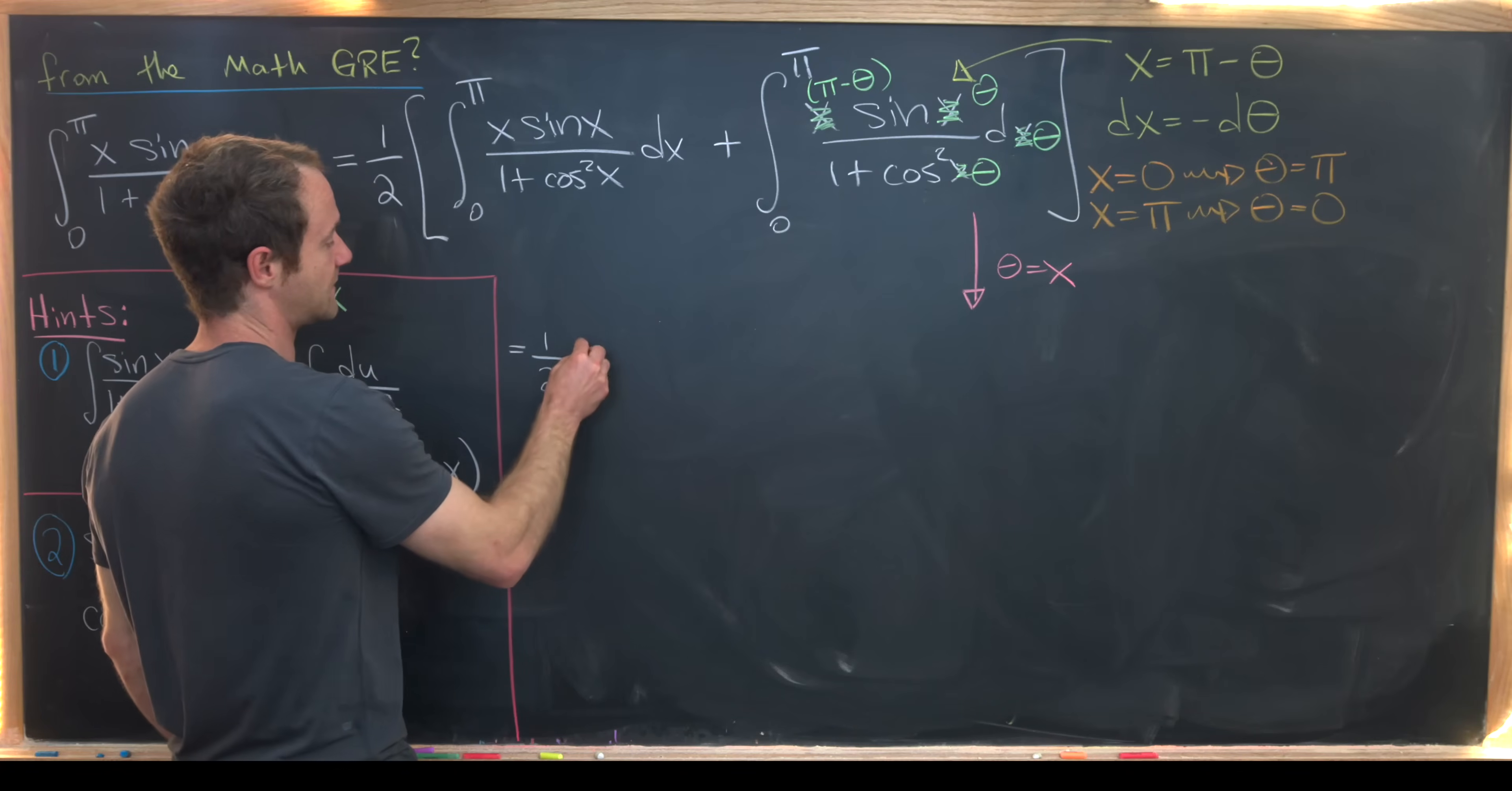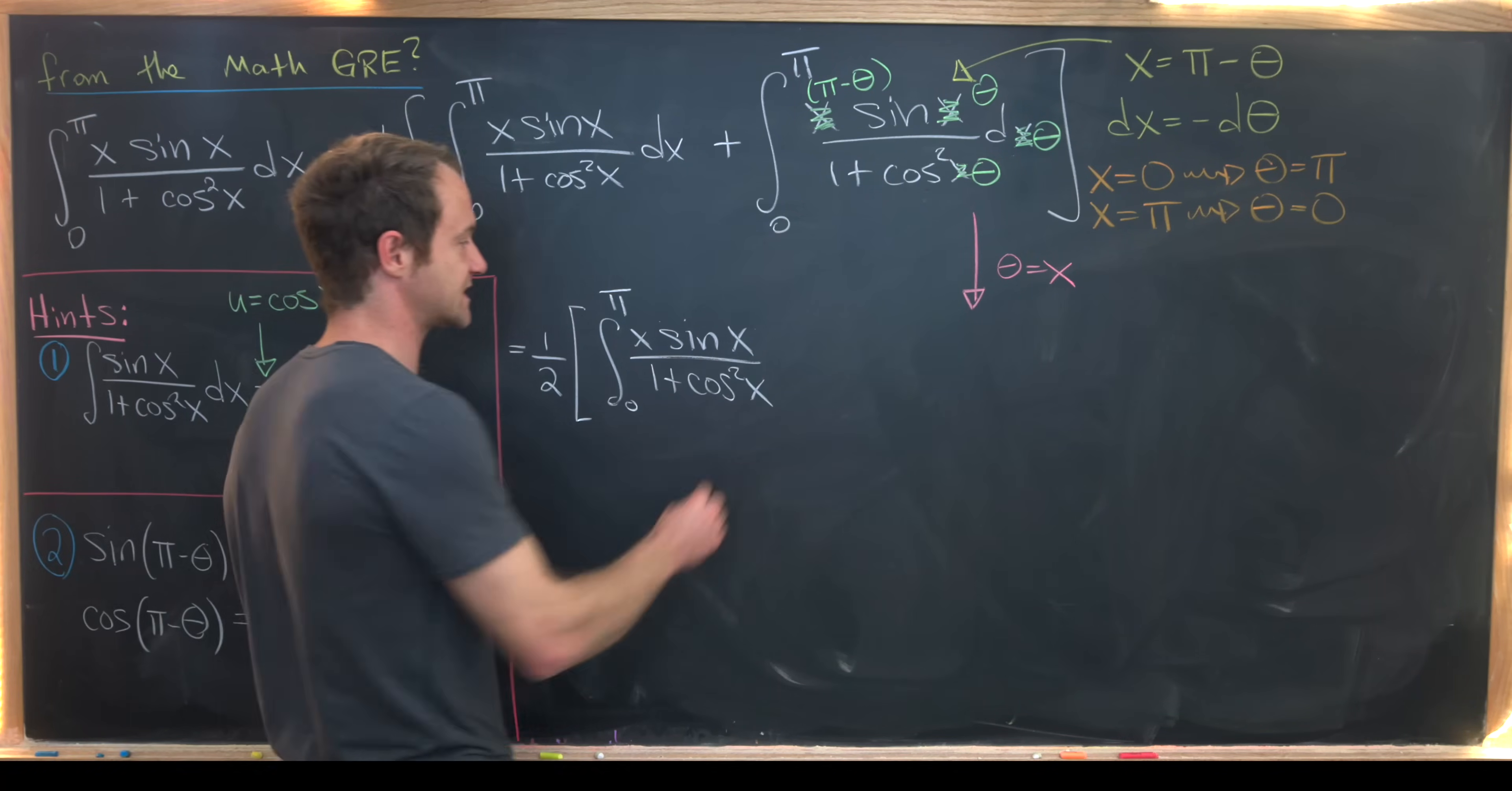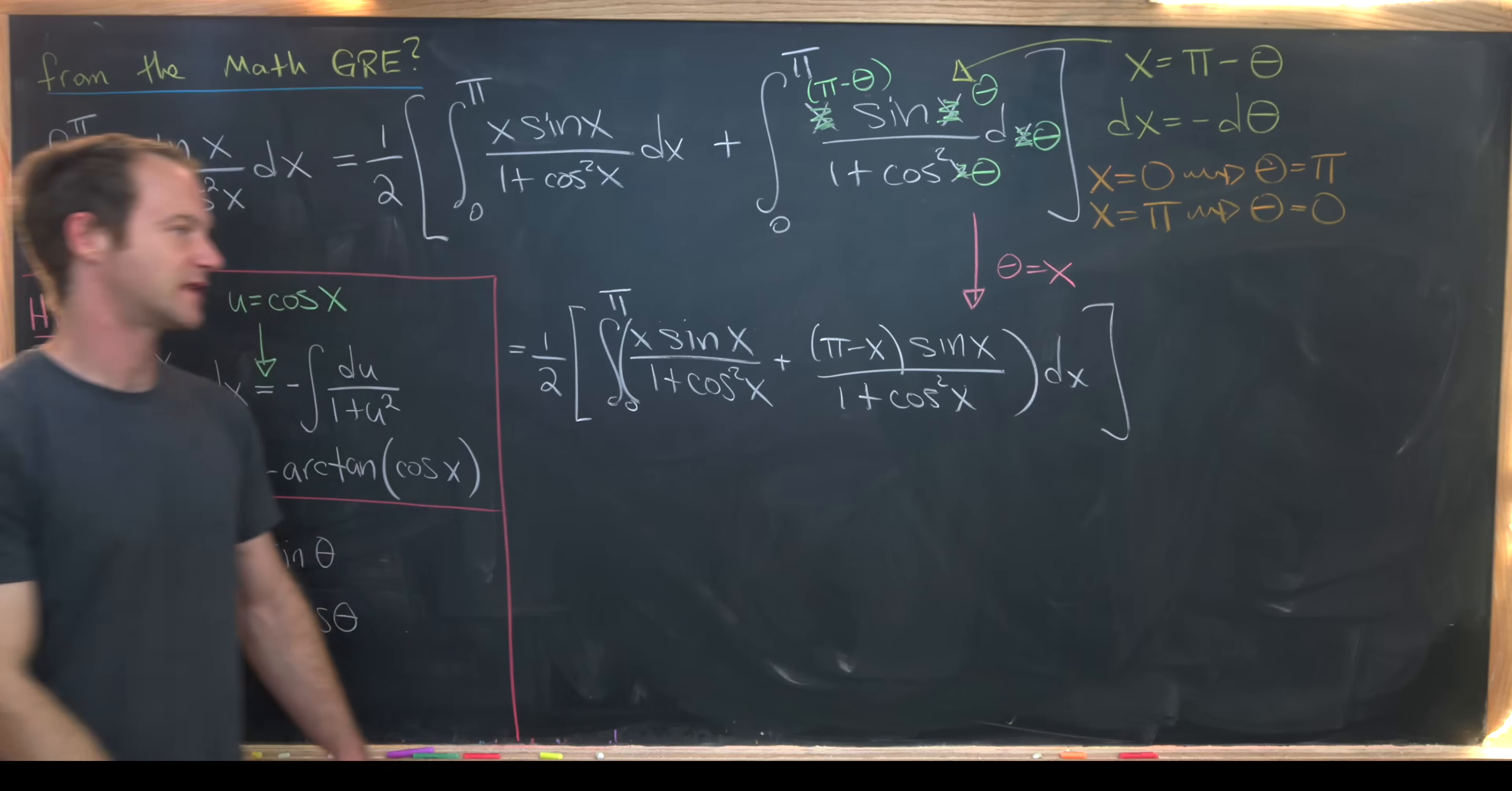So let's see what that gives us. That gives us one half. And then we've got this integral right here, which is unchanged, the integral from zero to pi of x times sine of x over one plus cosine squared of x. Then, since our bounds are the same, and I've changed my variables back, I might as well just put these into one integral. So that's going to be plus, so we'll have pi minus x, because we're substituting back in for theta equals x, times sine of x over one plus cosine squared of x. And then all of this is inside our integral.